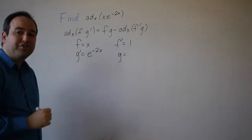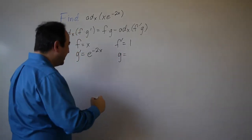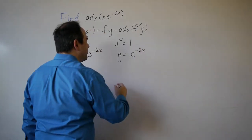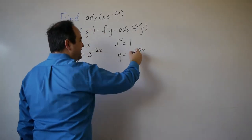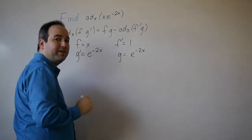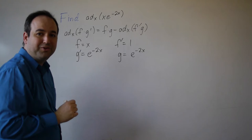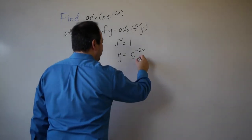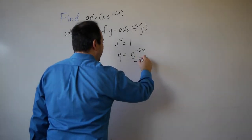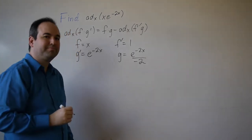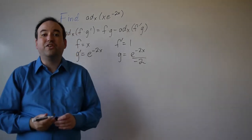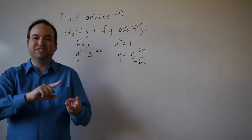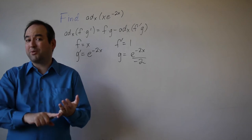If g prime is e to the minus 2x, then g is going to be e to the minus 2x, but remember when we differentiate this we bring down a negative 2, so we compensate in the anti-derivative by dividing by negative 2. Now that we have f, f prime, g, and g prime, we can go ahead and apply the formula.